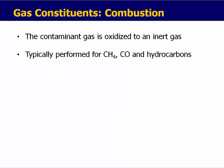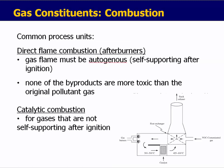The third mechanism for removal of gas constituents is combustion. The contaminant gas is oxidized to an inert gas. This is typically performed for methane and hydrocarbons. We've seen direct flame combustion or afterburners where the gas is simply flared. This is common for autogenous fuels that are self-supported after ignition, such as methane — used at wastewater treatment plants and landfill sites for methane release.